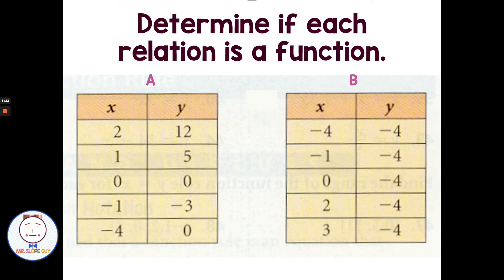What if we're given a table and need to determine if it's a function? Looking at table A, the x values are 2, 1, 0, negative 1, 4 — I don't see any numbers repeating, so it is a function because each x is only used one time. For table B, the x values are negative 4, negative 1, 0, 2, 3 — and even though the y values show a whole bunch of negative 4's, we only need to look at the x values. Each of those x's is unique, so both tables A and B are functions because the x's are each only used one time and not paired with multiple y's.